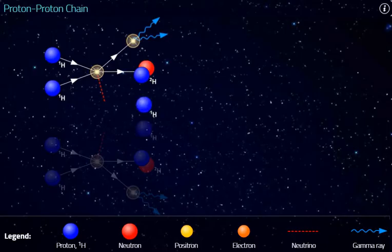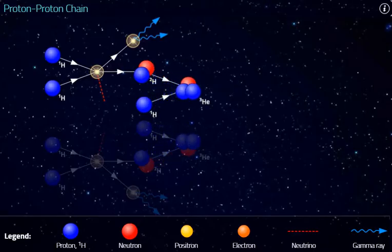Meanwhile, a third hydrogen nucleus collides with the deuterium nucleus to produce helium-3. A gamma ray is emitted in this reaction.